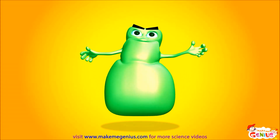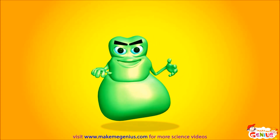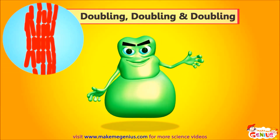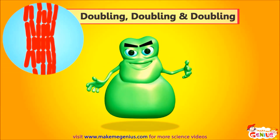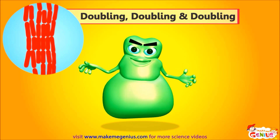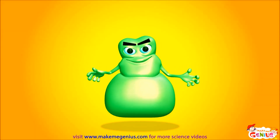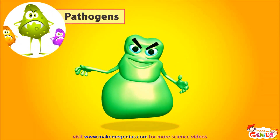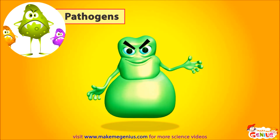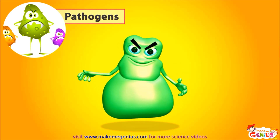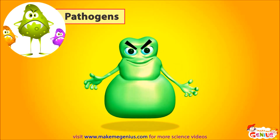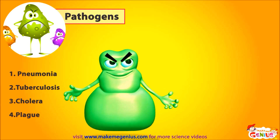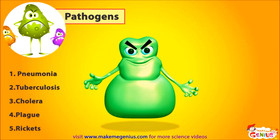Let me tell you a very strange thing about us. You know, we also have a target in life — we just want to double. We keep doubling, doubling, and doubling. This way we keep increasing. A few of us are really bad for you. Bad bacteria are called pathogens. They cause a lot of diseases. Pathogens can cause pneumonia, tuberculosis, cholera, plague, rickets, and more.